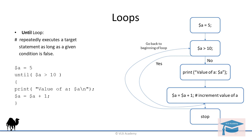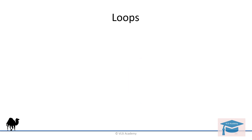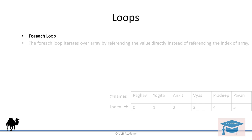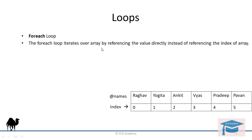Now let's move on to the foreach loop. The foreach loop iterates over an array by referencing the values directly instead of referencing the index of the array.